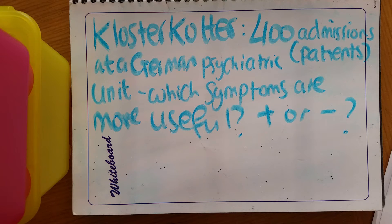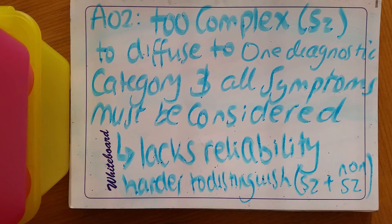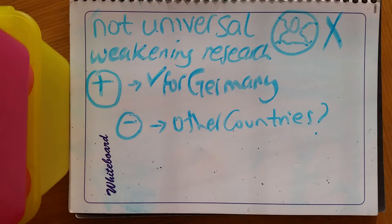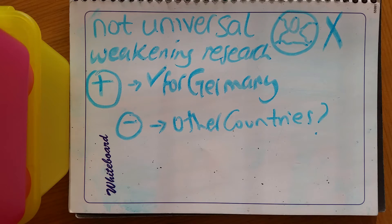Klosterkotter found that positive symptoms such as delusions and hallucinations seem more useful than negative symptoms. However, for a valid classification, it is too complex to reduce diagnosis to just one category and all symptoms should be considered. Otherwise, diagnosis lacks reliability as it is harder to distinguish between schizophrenic and non-schizophrenic patients. Klosterkotter's German study is also not universal, weakening the research.